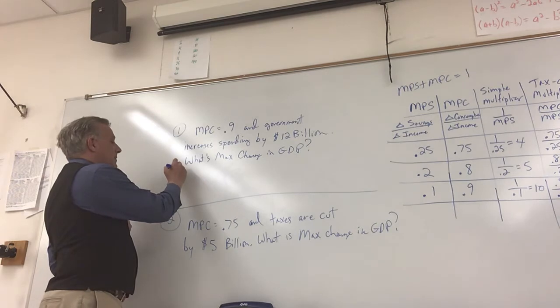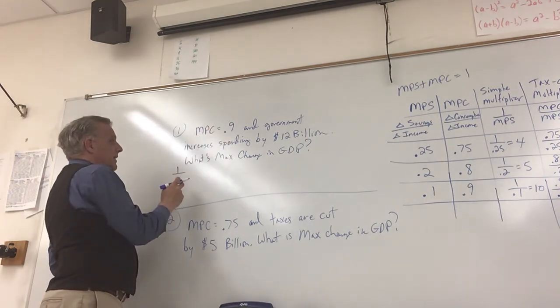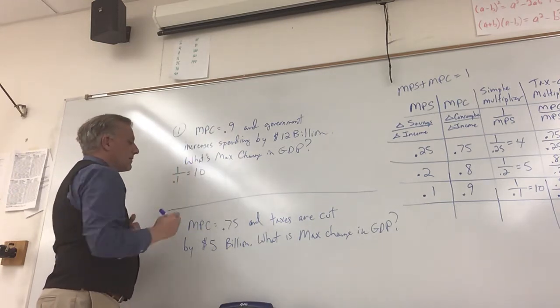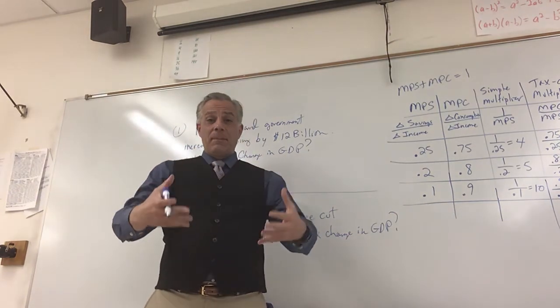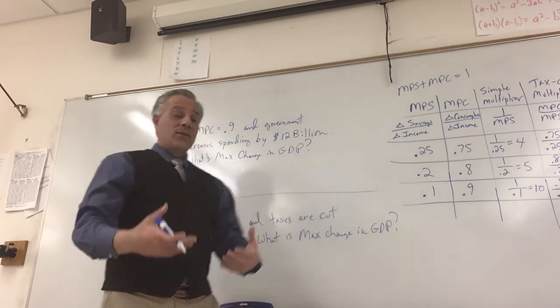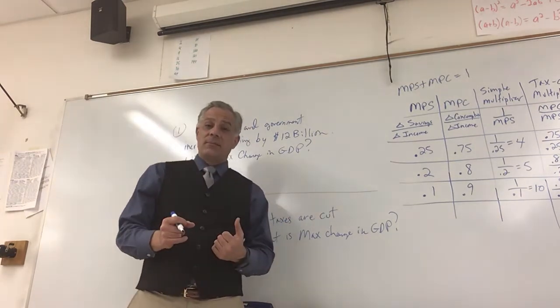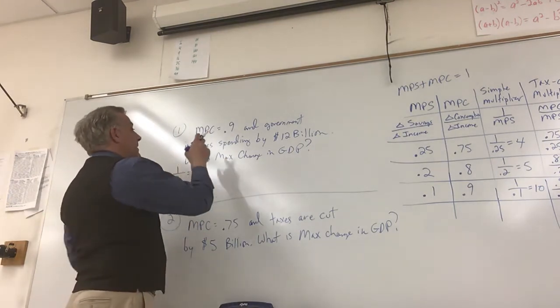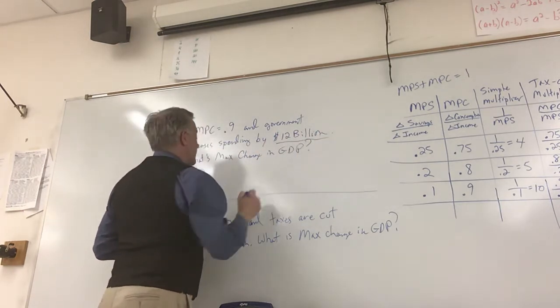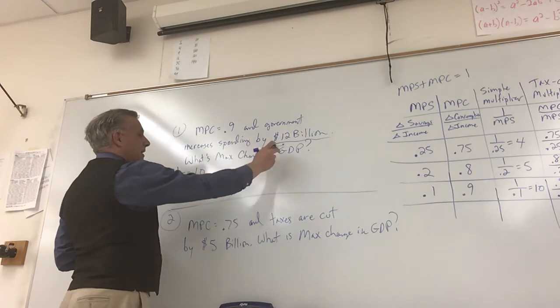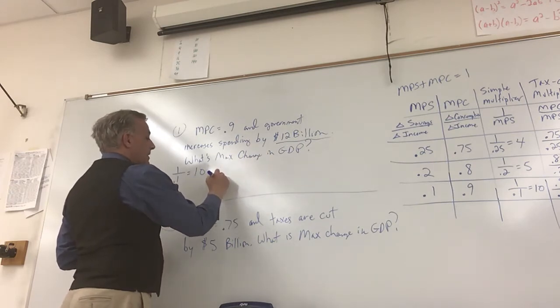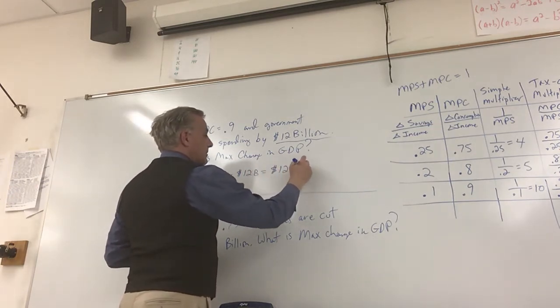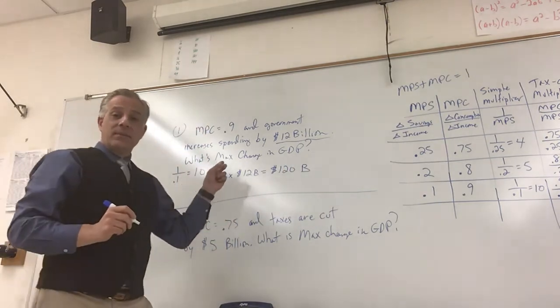If the MPC equals 0.9 and government spending increases by 12 billion dollars, what's the max change in GDP? Well, what's the multiplier? The MPS is going to be 0.1, right? Because 0.9 plus 0.1 equals 1. So 1 over 0.1 equals 10. I'm not trying to be funny. It's the opposite of trying to be funny. It's just telling you, if it's called a multiplier, I'm probably going to be doing some multiplying. So this 10, I multiply by the big fat number. Well, the big fat number sure isn't 0.9, so it's probably this over here, 12 billion. So the maximum change in GDP is 10 times 12 billion dollars or 120 billion dollars maximum change in GDP.